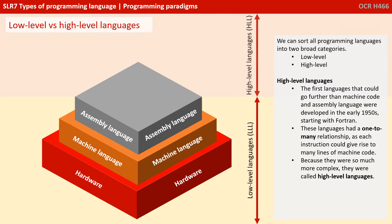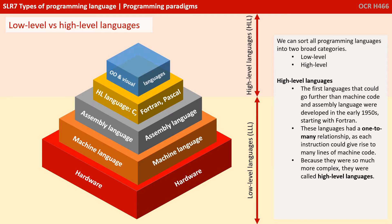Everything above assembly languages is known as high-level languages. The first languages that could go further than machine code and assembly language were developed in the early 1950s, starting with FORTRAN. These languages had a one-to-many relationship, as every instruction could give rise to many lines of machine code. Because they were so much more complex, they started to be known as high-level languages.